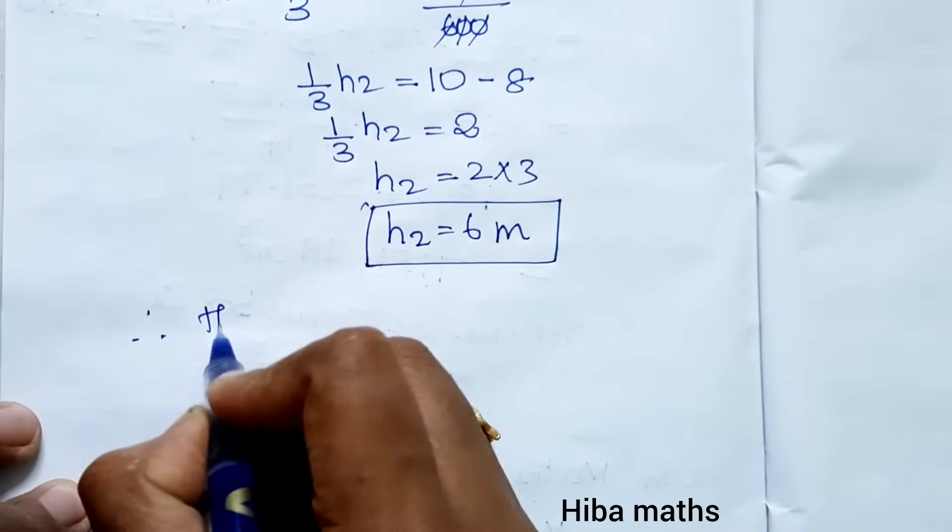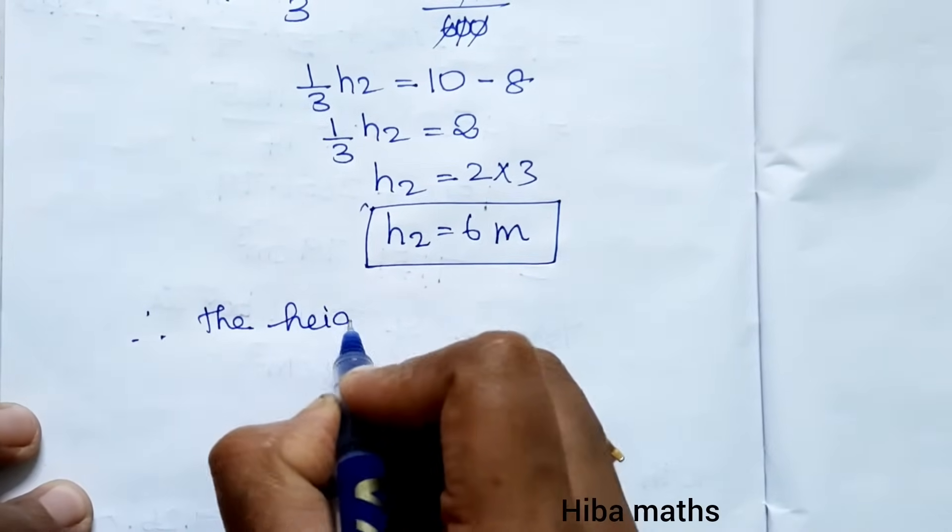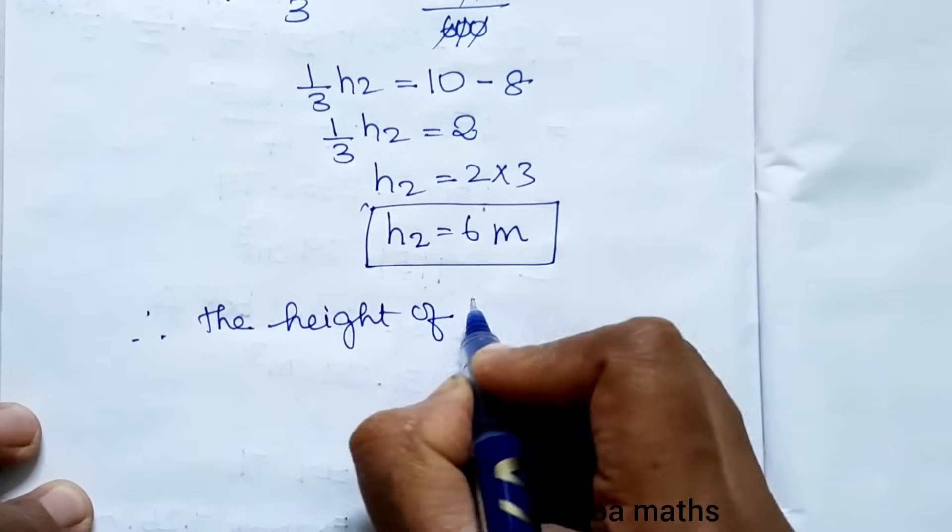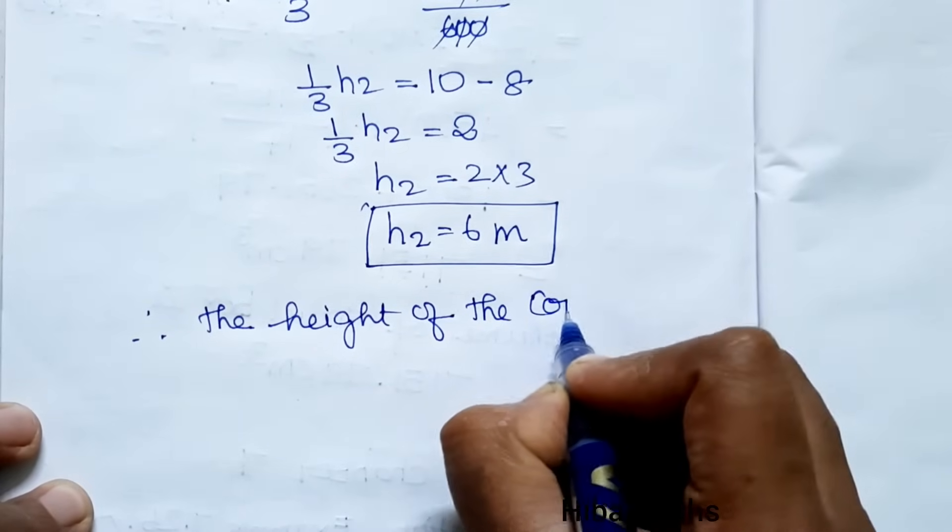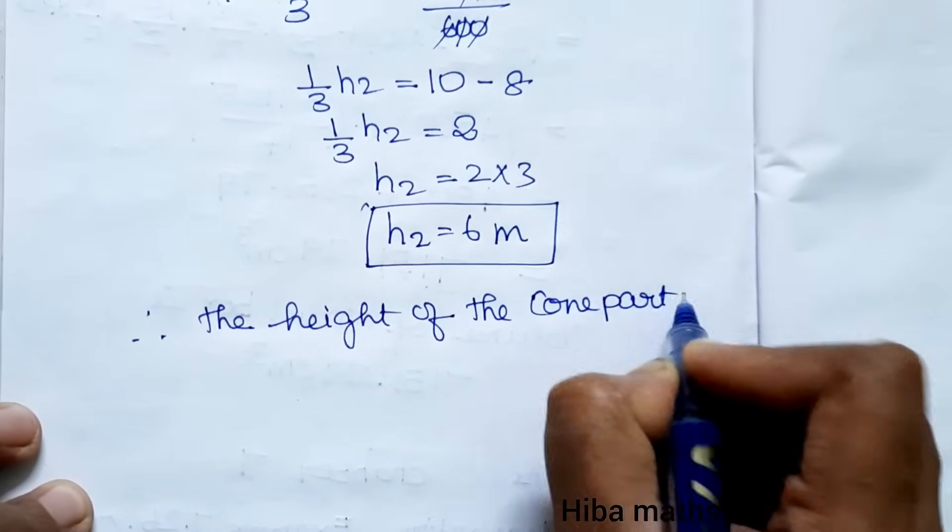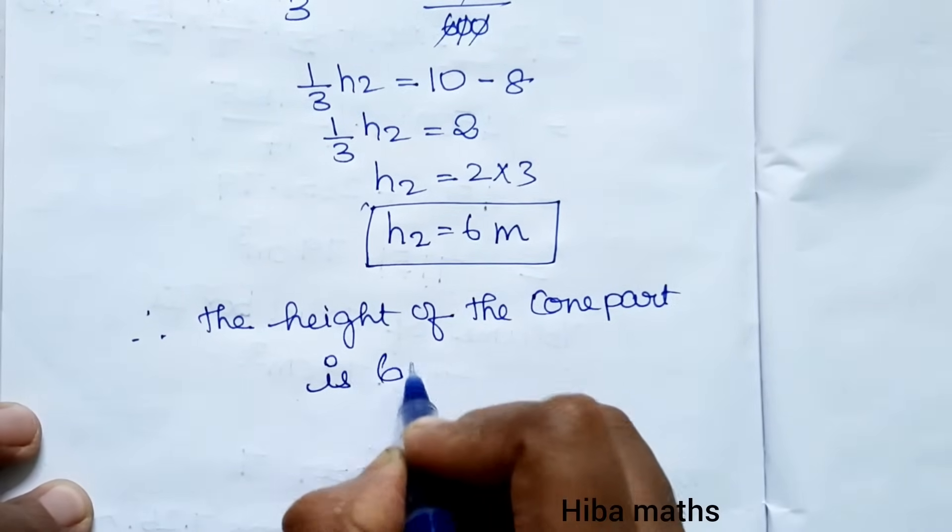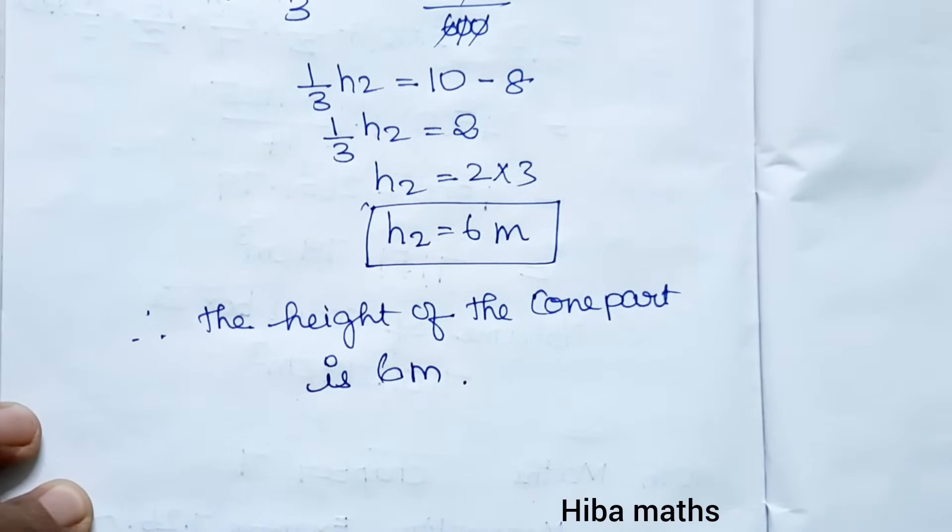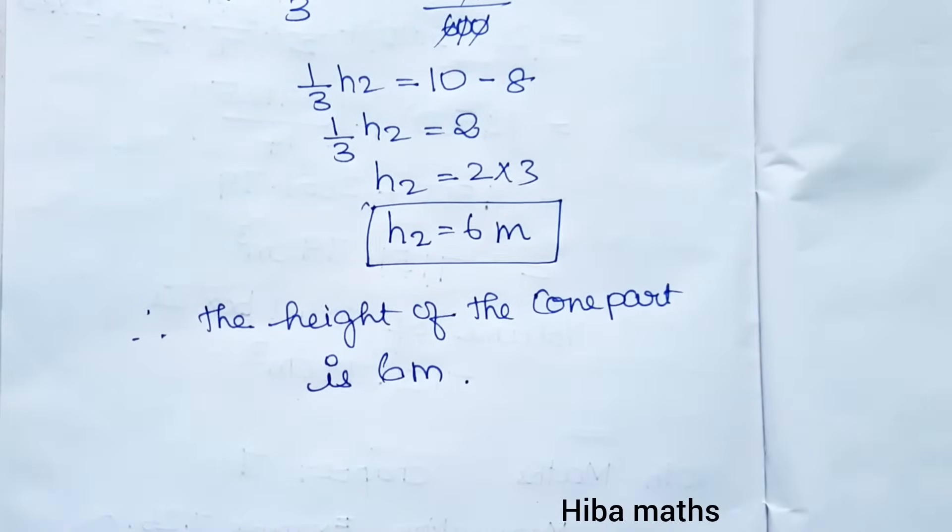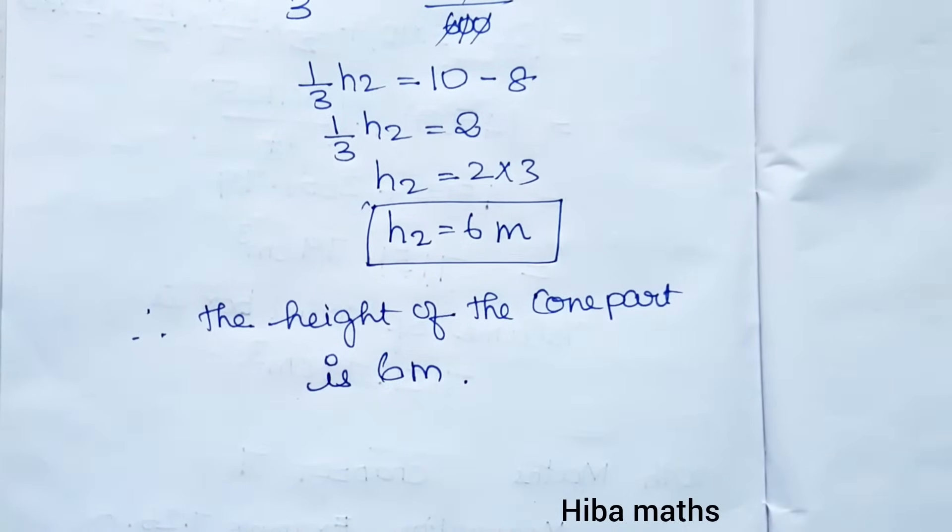Therefore, the height of the conical part is 6 meters. If you have any doubt, leave it in the comment section. Thank you so much for watching.